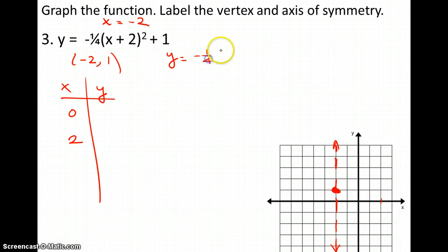But either way, you have negative 1/4 times 0 plus 2 squared plus 1. Negative 1/4 times 2 squared is 4 plus 1. And these cancel out, so you have negative 1 plus 1, which equals 0. That's a nice, friendly number. I like it.